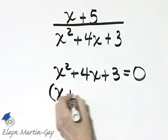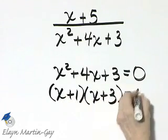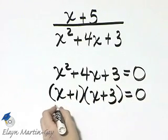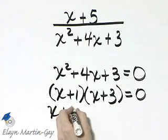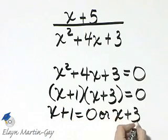That factors as x plus one times x plus three. And then remember we'll set each factor equal to zero. So x plus one equals zero or x plus three equals zero.